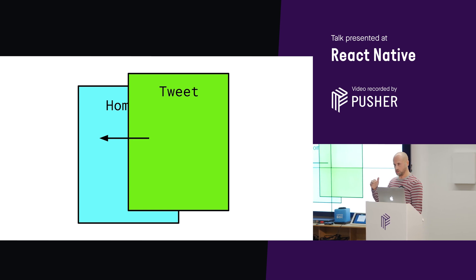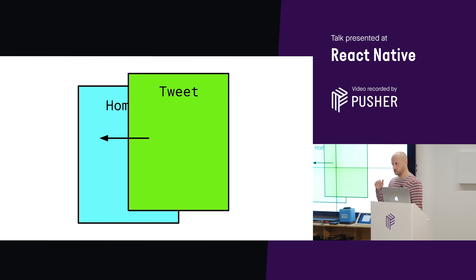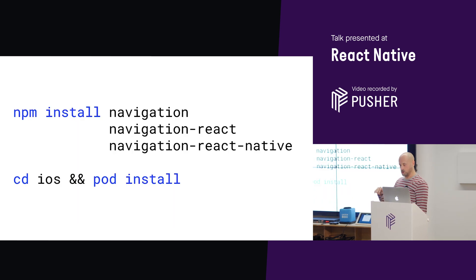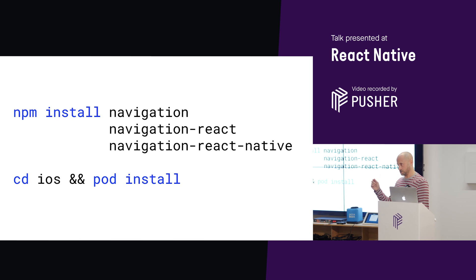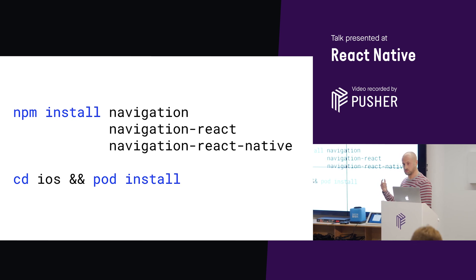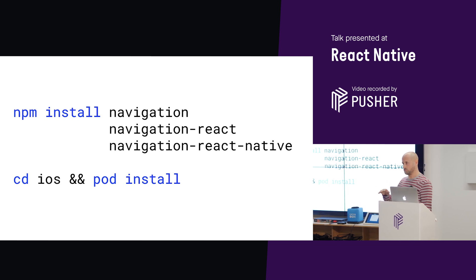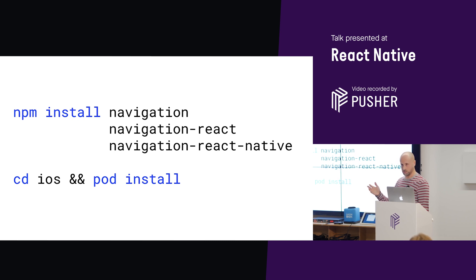I'm going to show how the Navigation Router uses these native navigation APIs on Android and iOS to give us 100% native navigation on both platforms. We're going to build a React Native Twitter app using the Navigation Router. Assuming we've already run React Native init Twitter, now we install the Navigation Router. We install three navigation-related packages from NPM and then auto-link them. That's it — we don't have to modify any native files or install any third-party libraries. The Navigation Router is ready to go.